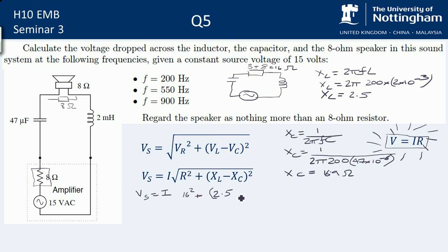So we can now put this in here, minus 16.9. That's all going to be squared and then square rooted. And we know Vs because Vs is given here, it's 15 volts. So we end up with 15 is equal to I times 16.5. Which means that I is equal to 0.7 amps.